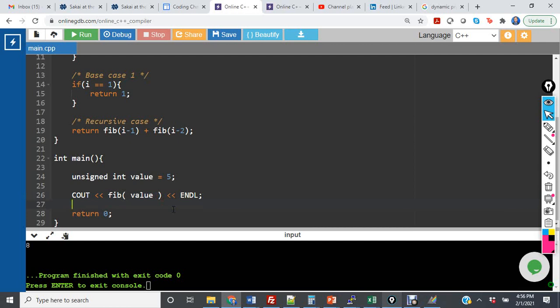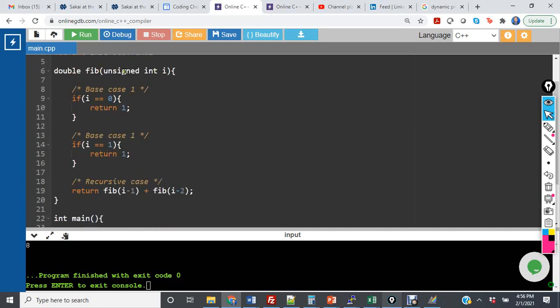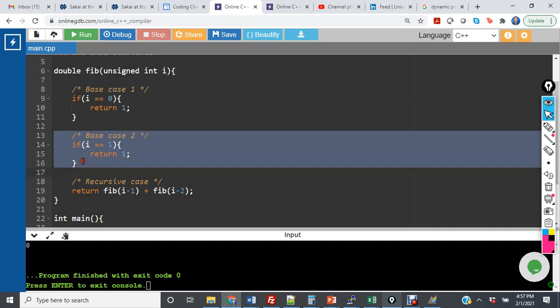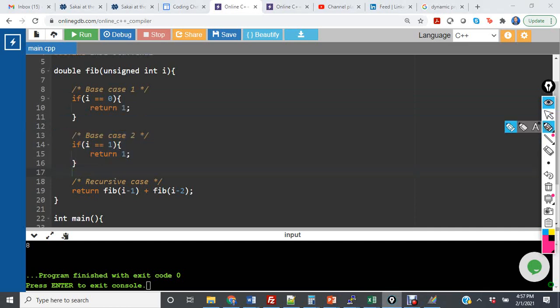So now I'm going to go up to fib and show you how this code works. It takes in an unsigned integer, and there are two different base cases. The first base case is if i is equal to 0, I return 1. The second base case is if i is equal to 1, I also return 1. Because recall that the Fibonacci sequence takes these first two numbers and then adds the next two in the sequence.